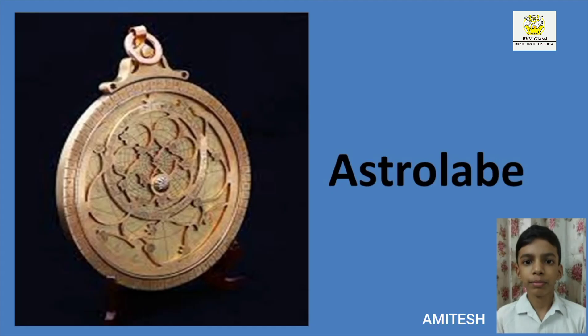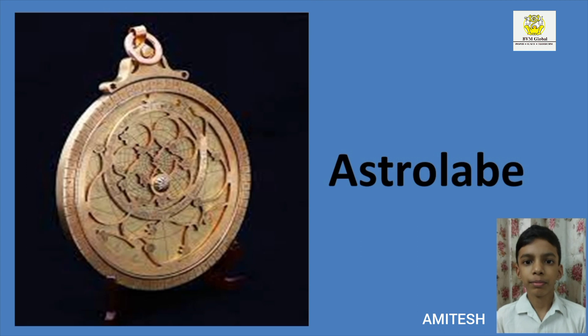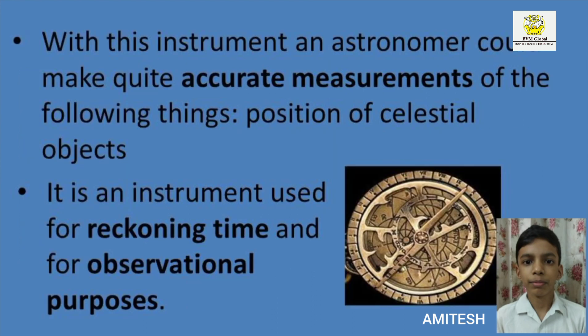Hi everyone, my name is Amitesh and today I am going to talk about the astrolabe. An astrolabe is an ancient astronomical instrument — a handheld model of the universe and a two-dimensional model of the celestial sphere. With this instrument, an astronomer could make quite accurate measurements of the position of celestial objects. It is an instrument used for recording time and for observational purposes.